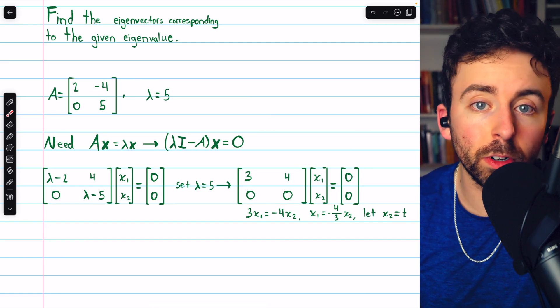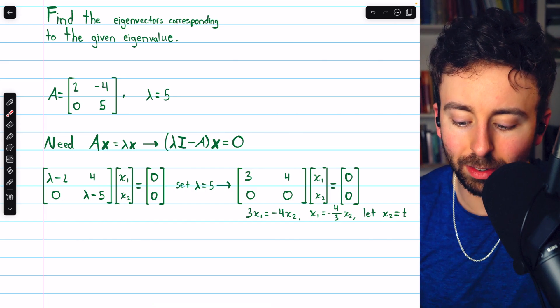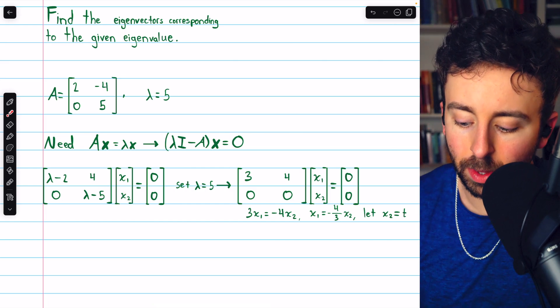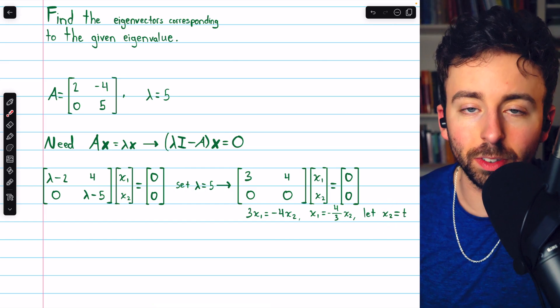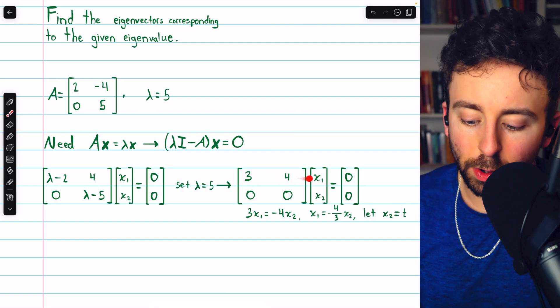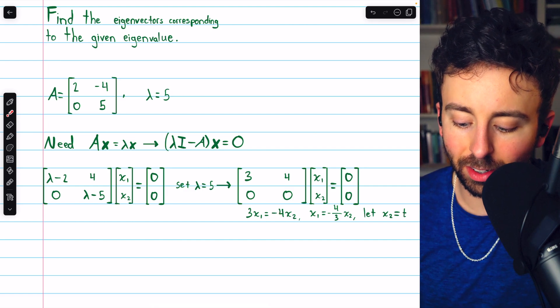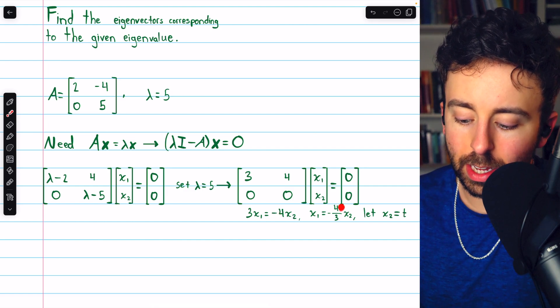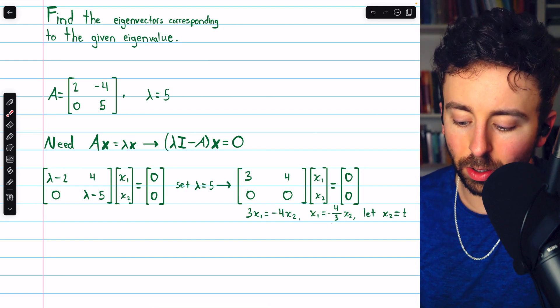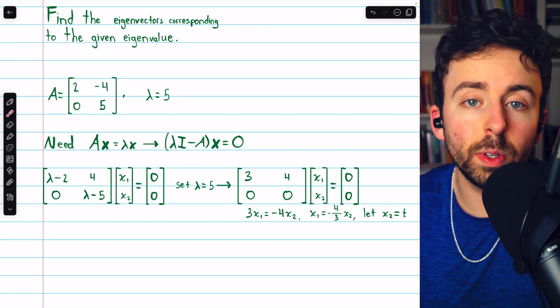We have a leading entry in column one, and we have no leading entry in column two. So the variable corresponding to column two, x2, is a free variable. Let's say x2 equals t. So then from this first row, we have that three x1 equals negative four x2. So x1 equals negative four thirds x2.